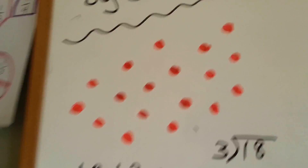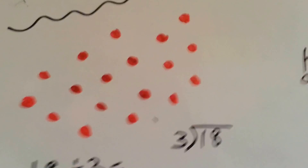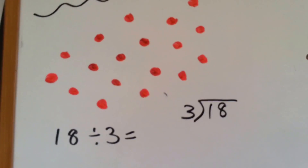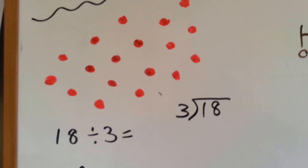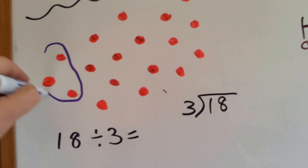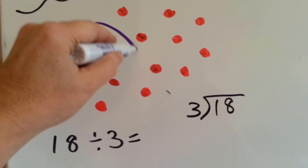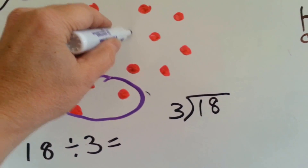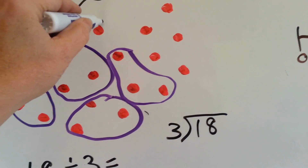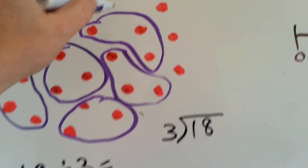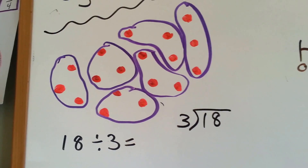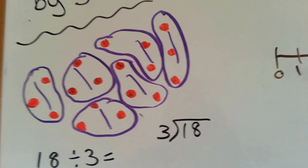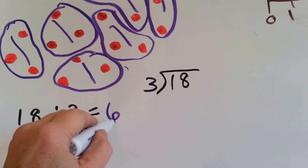Let's look at what we've got here. I've got 18 dots, and we're going to make groups of 3. I'm going to put 3 in each group. How many groups do we have? 1, 2, 3, 4, 5, 6. 6 groups. 18 divided by 3 is 6.